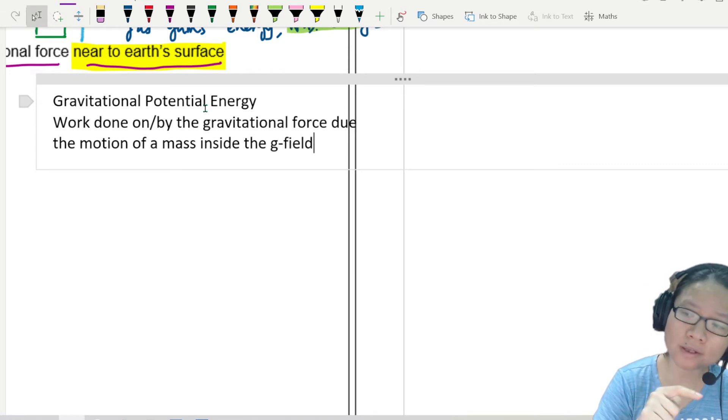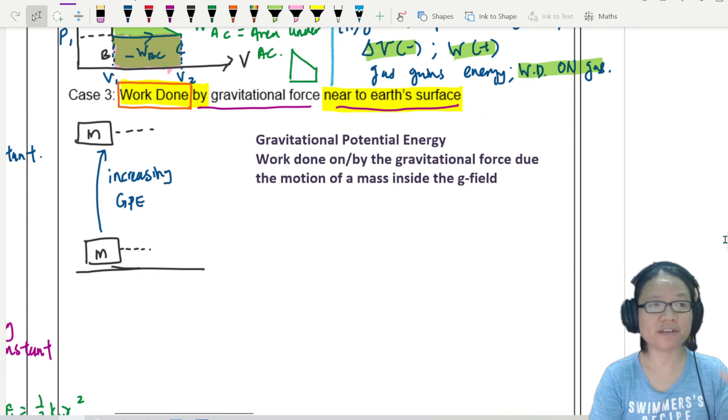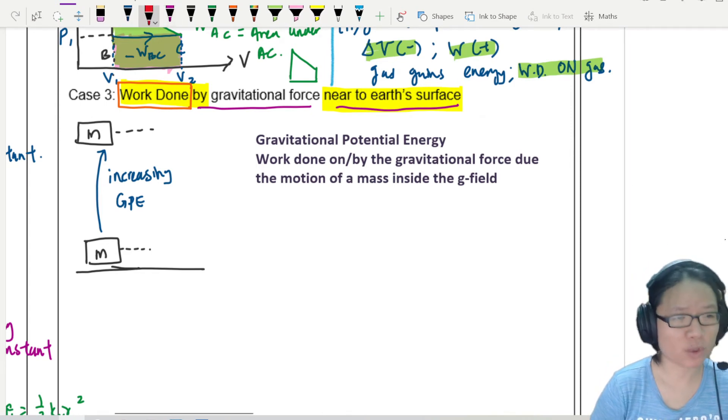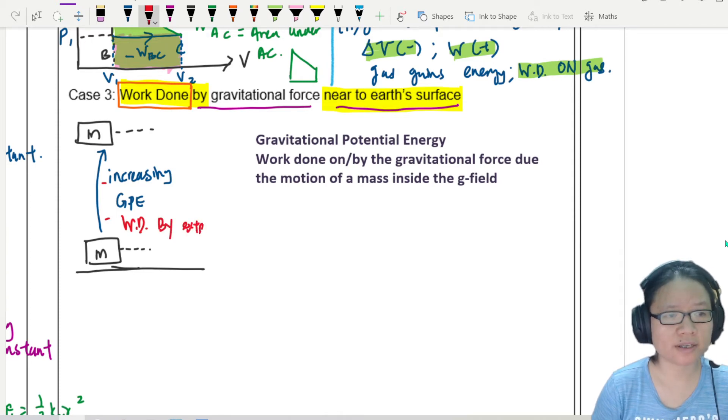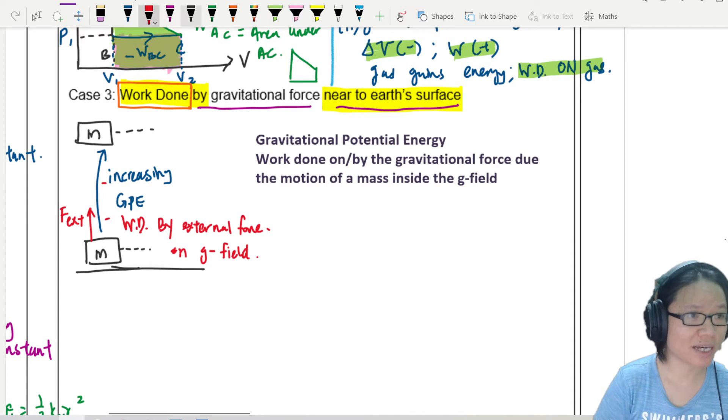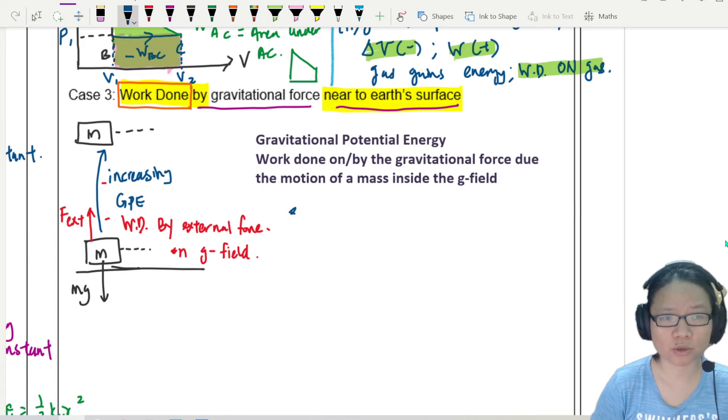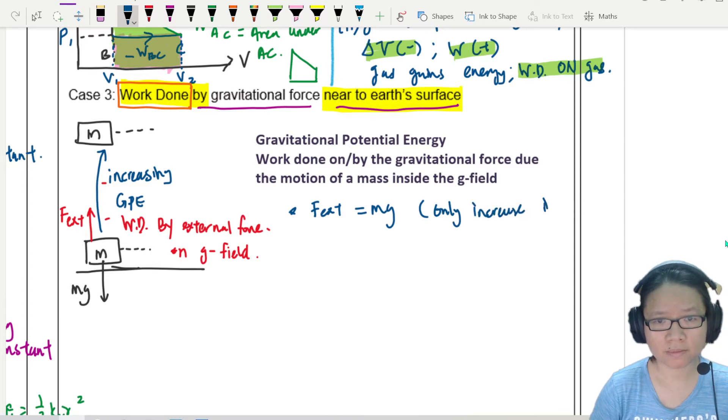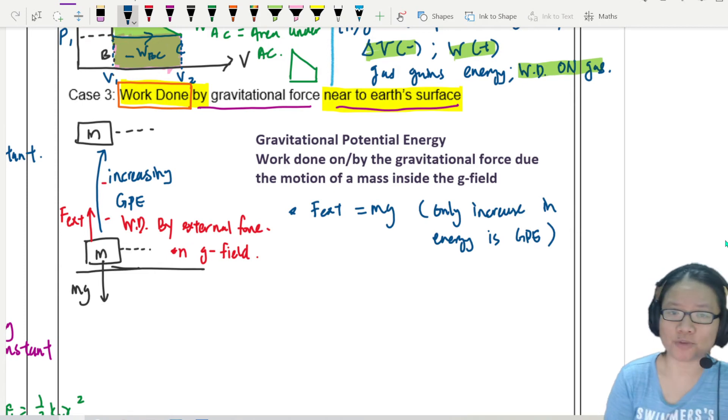Let me show you what I mean by work done on versus work done by. Looking back at this situation where you lift up a mass m and increasing the GPE, whenever you increase the energy of something, this is work done by the external force. You need an external force on the gravitational field. So we basically need an external force to pull it this way. And I need to make sure that this external force is just nice and equal to the weight of the object, mg. Why do we need external force to be equal to mg? Because I want to make sure the only increase in energy is GPE. Only increase in energy is GPE. I didn't increase the KE.